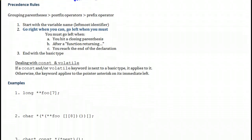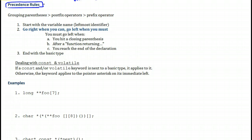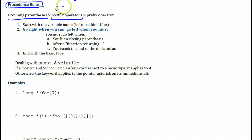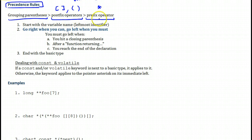To actually read C declarations we will use precedence rules. Just like we have precedence rules for arithmetic operators, we will also have precedence rules here which dictate the way we read the C declaration. Grouping parentheses have a higher priority than postfix operators. The postfix operators are the two derived types seen earlier: the array and the function. The prefix operator — the pointer — comes last in terms of priority.